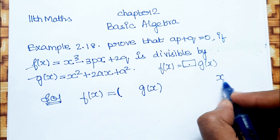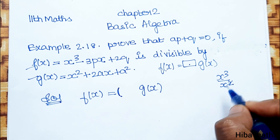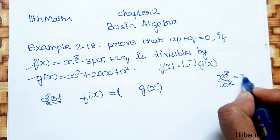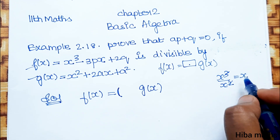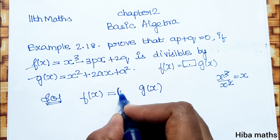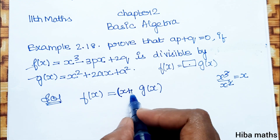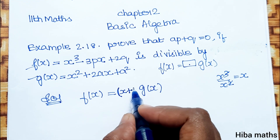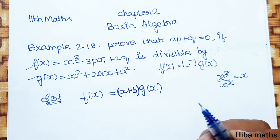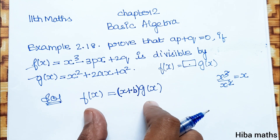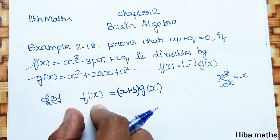There is x cube and x square. We cancel the terms to find the quotient. The first term of the quotient is x. Now we have the condition — we substitute the polynomial to find the constant b.